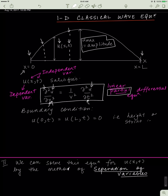Another thing we should note is that u is the dependent variable — its value depends on the values of x and t. So x and t are independent variables. x and t can change, and depending on that, u changes as well.